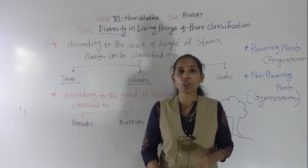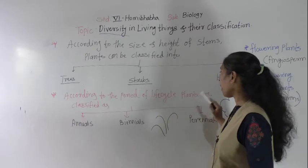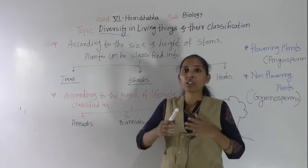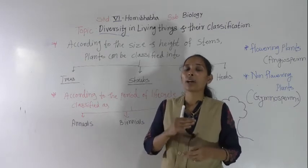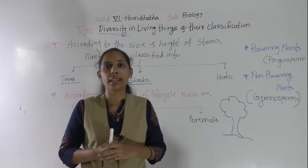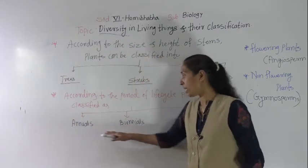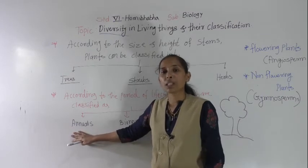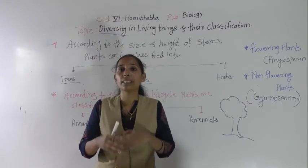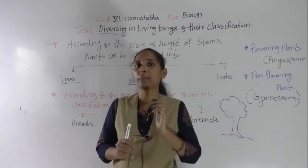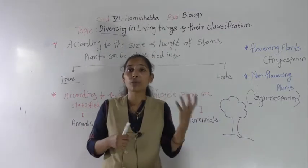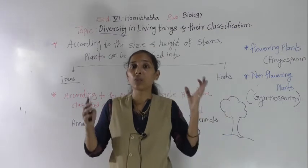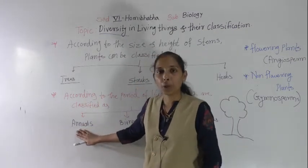Now we will discuss the next classification of plants — according to the period of life cycle. According to the lifespan of the plants, they are divided into three categories: annuals, biennials, and perennials. Annuals are plants which complete their biological life cycle within one year. Biological life cycle means fruiting and flowering. If the plant completes its life cycle — that is, fruiting and flowering — within one year, then that plant is called an annual plant.